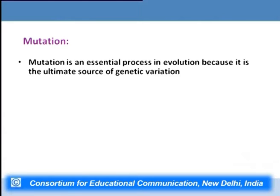Now, what exactly is mutation? It is an essential process in evolution because it is the ultimate source of genetic variation. Any genetic variation in any organism can be brought about by mutation only. The process of meiosis during sexual reproduction brings about recombination, but it cannot produce new nucleotide sequences of specific alleles — only mutation can do that. So mutation produces the raw material on which different forces of evolution will act.